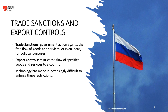For export controls, an example would be U.S. restrictions on the export of advanced computing technologies to certain countries. The United States, through the Department of Commerce's Bureau of Industry and Security (BIS), may require companies to obtain a license before exporting certain high-performance computer chips or other sensitive technology, to prevent their use in military programs that could threaten national and global security. Technology has made it increasingly difficult to enforce these restrictions, as software and blueprints for advanced technology can be shared online, bypassing traditional export controls.